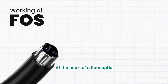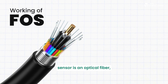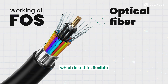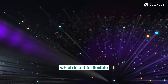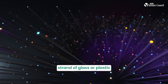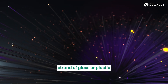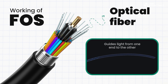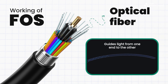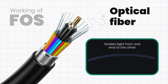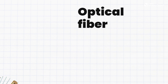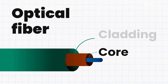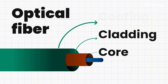At the heart of a fiber optic sensor is an optical fiber, which is a thin flexible strand of glass or plastic that guides the light from one end to the other. The optical fiber consists of three main parts: the core, the cladding and the coating.